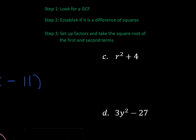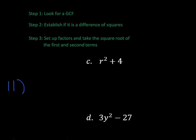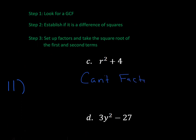Let's look at example C. Step one: is there a GCF? R squared and 4 don't have anything in common, so no GCF. Step two: establish if it's a difference of squares. Can I take the square root of the first term? Yes. Can I take the square root of the second term? Yes. Is there a minus sign between them? No, there is not. We have to have yes to all three questions, so we cannot factor this one — it is prime.